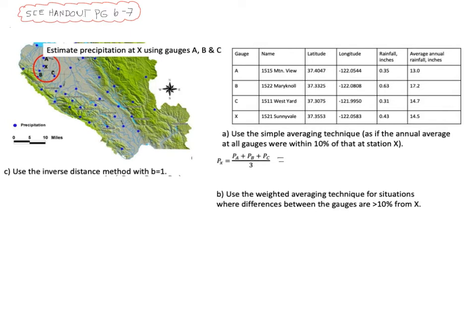So this is equal to 0.35 inches of rain plus 0.63 inches of rain plus 0.31 inches of rain divided by 3, which is equal to 0.43 inches of rain. So using the simple averaging technique, we would estimate the precipitation at that Sunnyvale site is equal to 0.43 inches of rain for this particular storm.